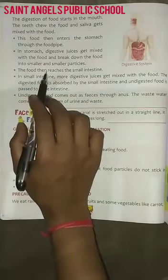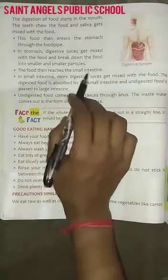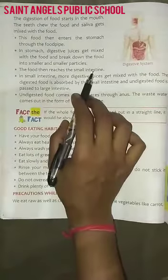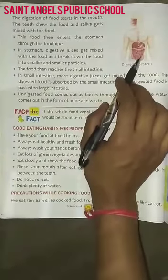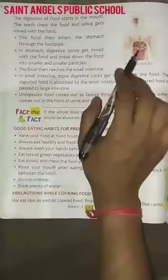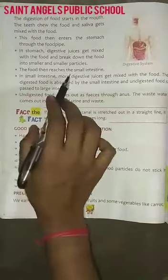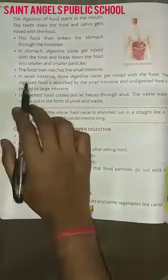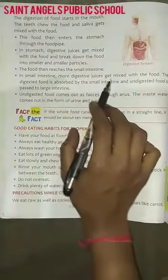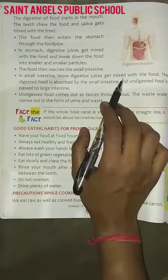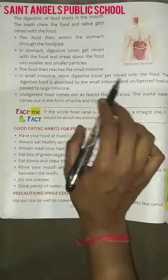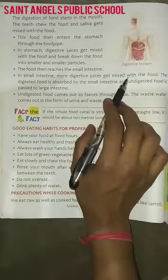And the food then reaches the small intestine. Bhojan iske baad chhoati aat meh pachak jata hai — jo aapko yeh beech meh dikhaye dhi hai, this is called small intestine. To khana stomach meh jaane ke baad small intestine meh pachak jata hai. In the small intestine, more digestive juices get mixed with food. Chhoati aat meh aur jyadha pachak raks bhojan meh mil jaate hai.